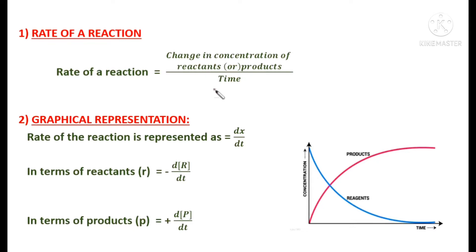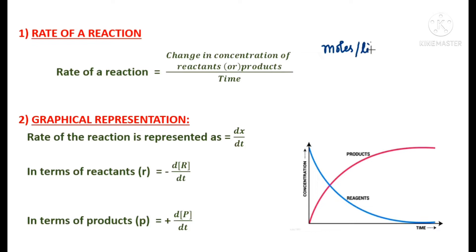Now let us see how to find out the unit for this rate of reaction. You should know the unit for the concentration of the reactants — it is the number of moles of the solute per liter of a solution. So for concentration it is moles per liter.